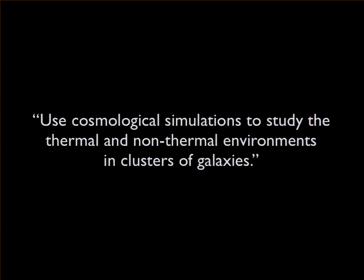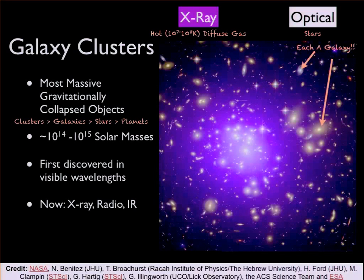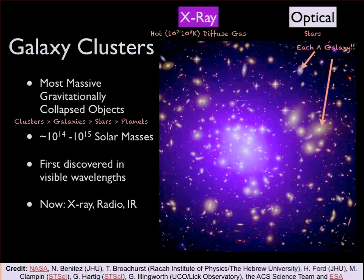The main point of this talk and my research was to use cosmological simulations to study the thermal and non-thermal properties of clusters of galaxies. Thermal being normal particles — protons in a Maxwellian distribution — and non-thermal being relativistic particles. A galaxy cluster is the most massive gravitationally bound object in the universe, composed of many galaxies, which themselves are composed of many stars. They're 10 to the 15 times the mass of our sun. First discovered in visible wavelengths, we now see them in x-ray, infrared, and radio wavelengths. In this image, the purple is diffuse x-ray emission from very hot electrons at 10 to the 7 to 10 to the 8 Kelvin, and the white optical light shows all the individual galaxies.